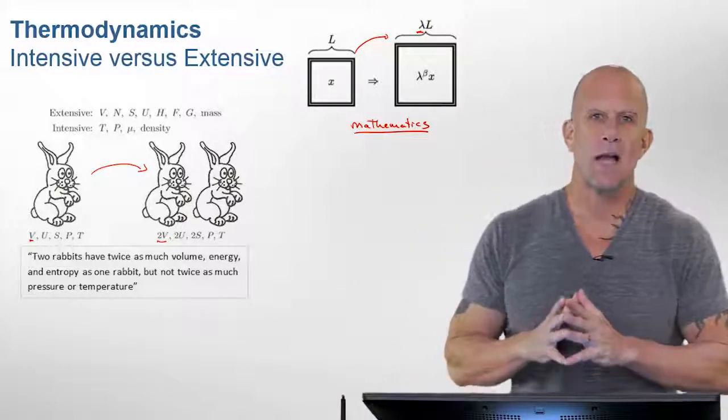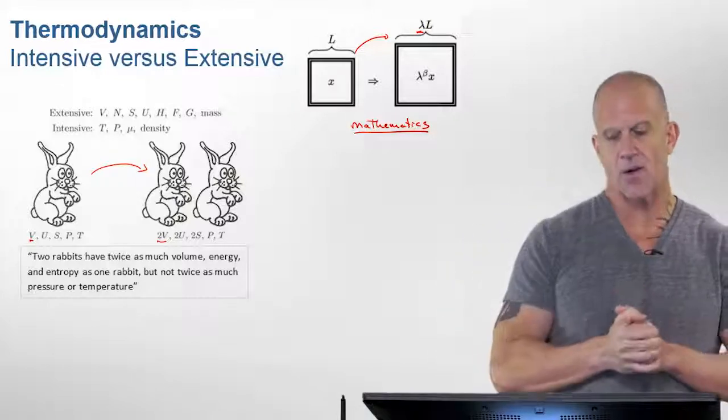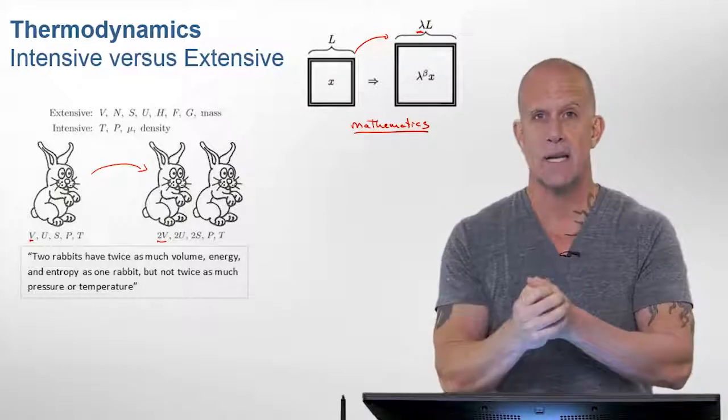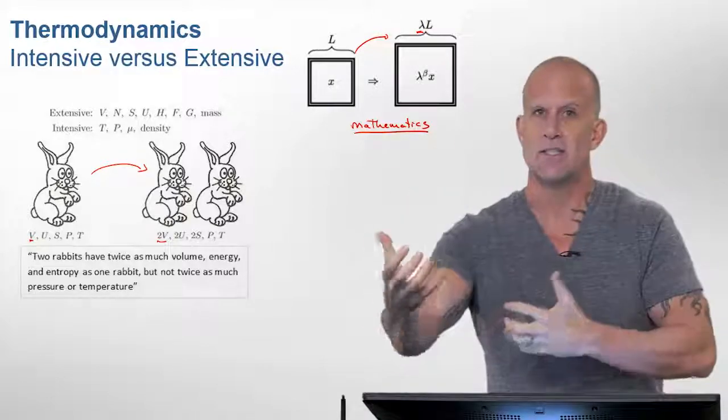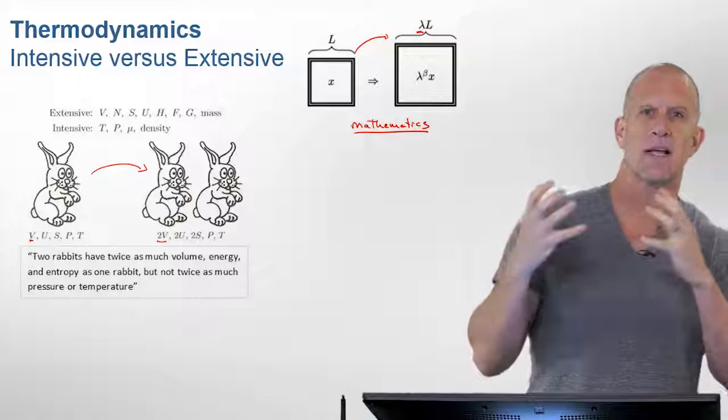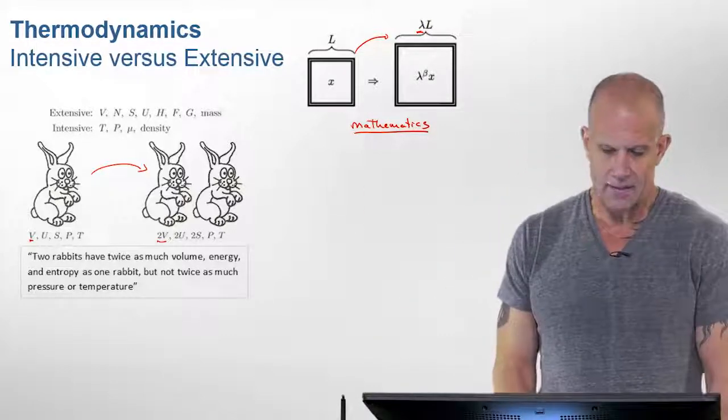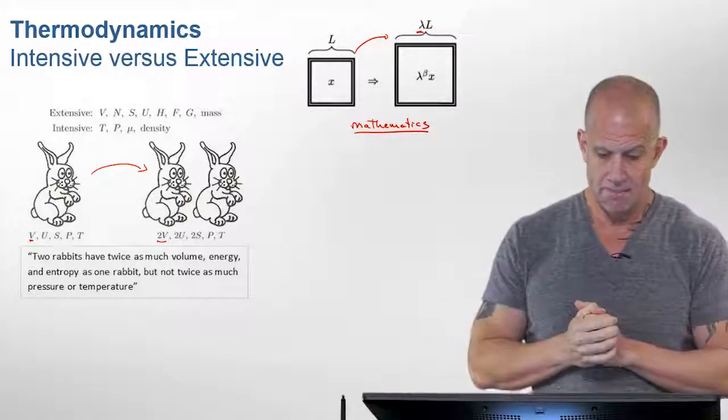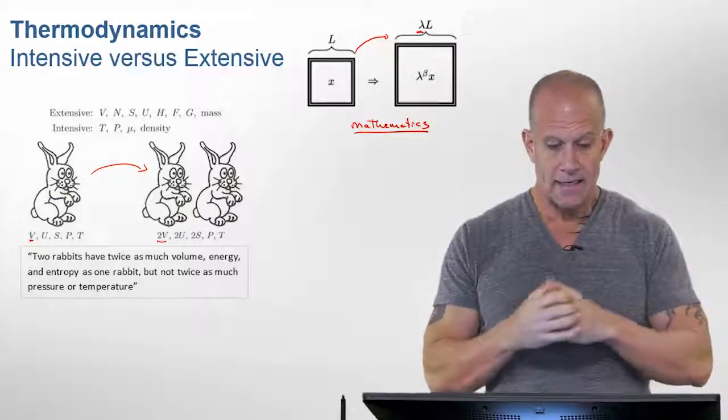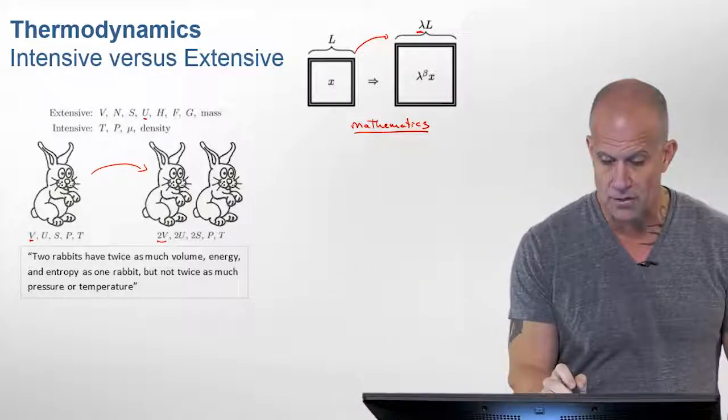This is very important to look at when we look at thermodynamic parameters. Let's start with the one that we define thermodynamics by, which is the energy. The first law is a conservation of energy. The second law is telling us the form of energy that heat has as far as entropy. So when we double the system, we double its energy.